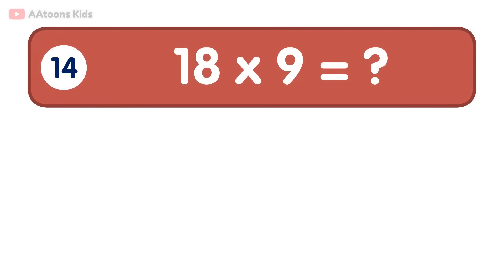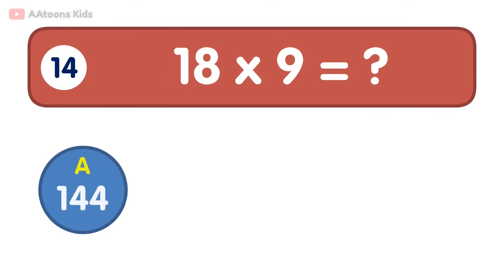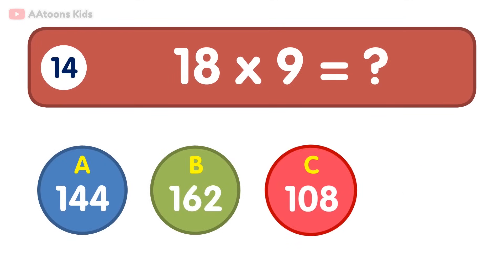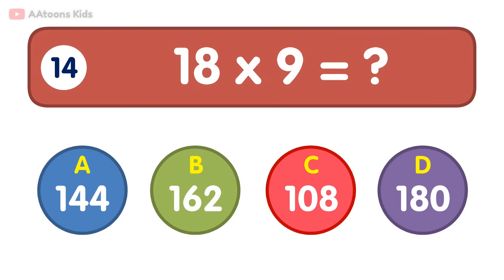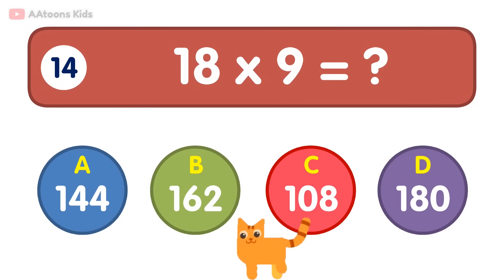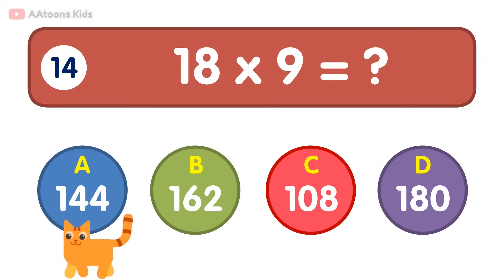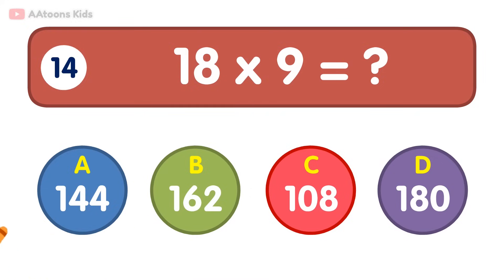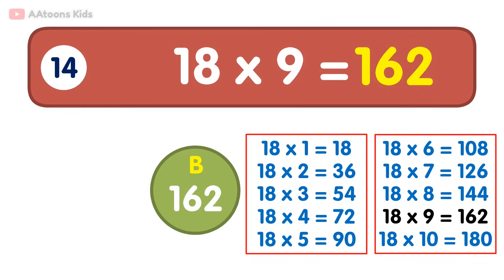18 times 9 is equal to 162. 18 times 9 is 162.